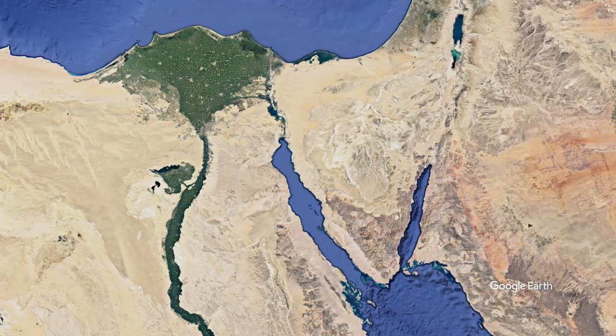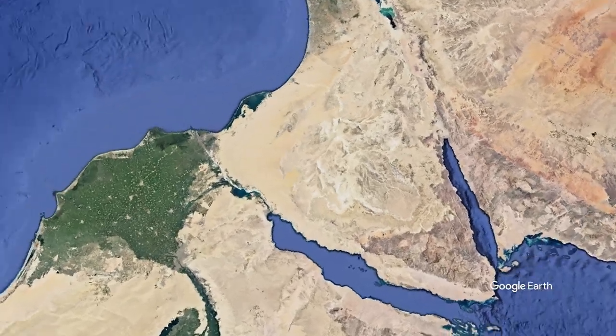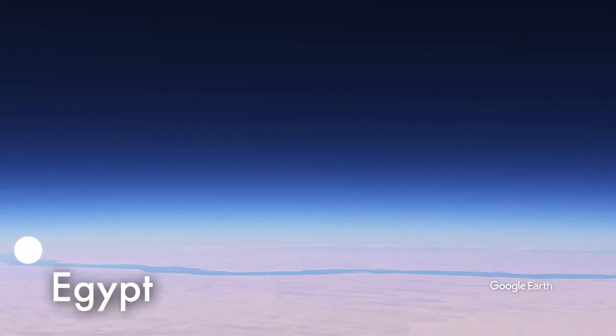In Exodus, Israel begins in slavery and journeys to freedom — Sabbath rest at Mount Sinai. The symbolic structure works both vertically and horizontally. Horizontally, they move from Egypt to Mount Sinai, one location to another miles away. Vertically, they begin low at sea level and the Nile River and move up to a mountain.